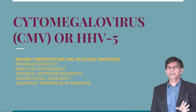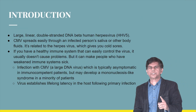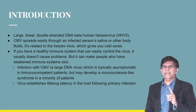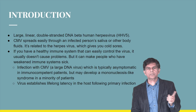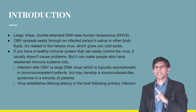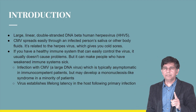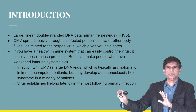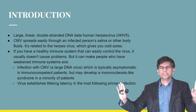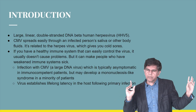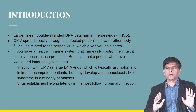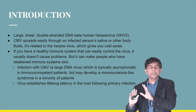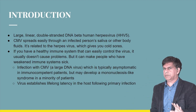Cytomegalovirus introduction. It's a large linear double-stranded DNA beta human herpes virus, HHV-5, spread through infected persons' saliva or body fluids. If you have a healthy immune system, the virus can stay dormant and cause no problem. In an immunocompromised person, it's different — they start having problems.